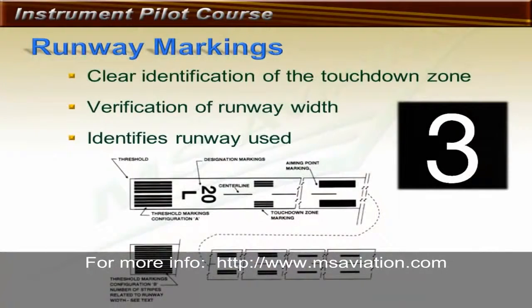Runway markings are part of an instrument landing system. Runway markings allow the pilot to see the touchdown zone more clearly and allow the pilot to see the width of the runway, along with how much runway has been used.